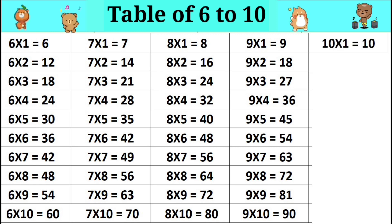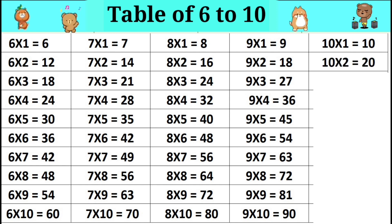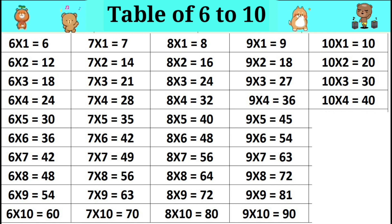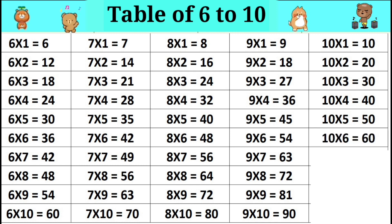Table of 10. Ten ones are 10. Ten twos are 20. Ten threes are 30. Ten fours are 40. Ten fives are 50.